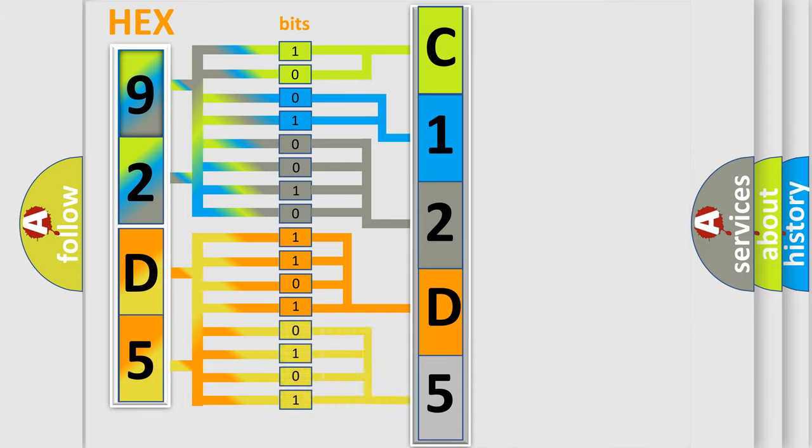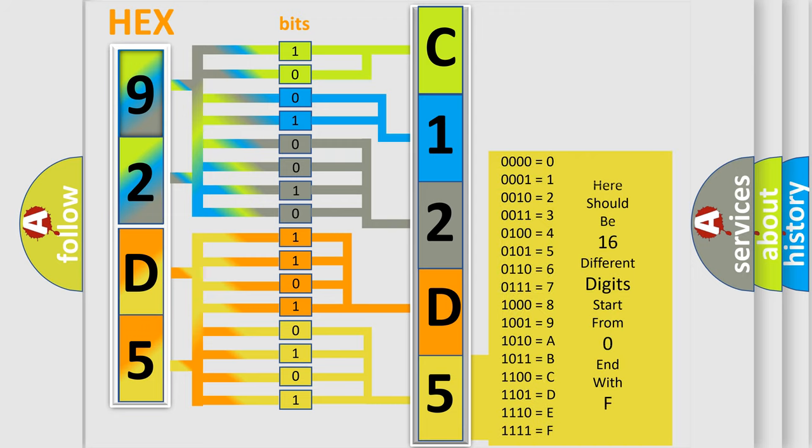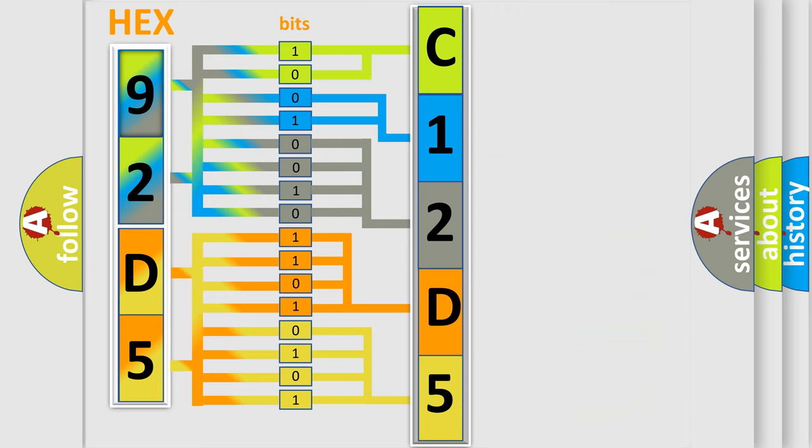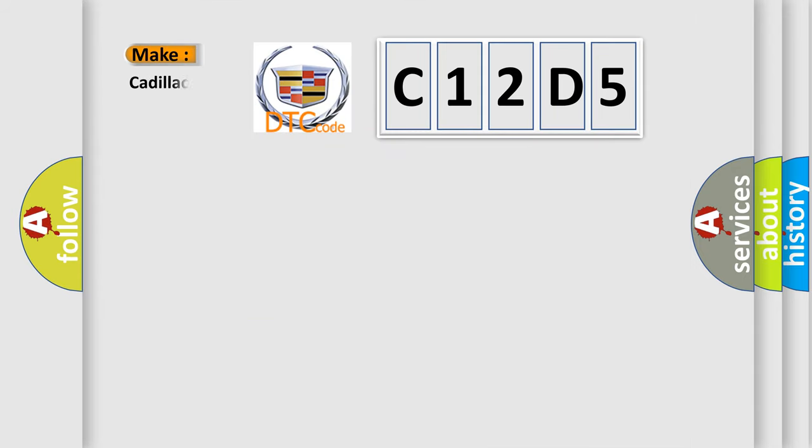A single byte conceals 256 possible combinations. We now know in what way the diagnostic tool translates the received information into a more comprehensible format. The number itself does not make sense to us if we cannot assign information about what it actually expresses. So, what does the diagnostic trouble code C12D5 interpret specifically for Cadillac car manufacturers?